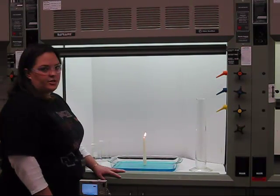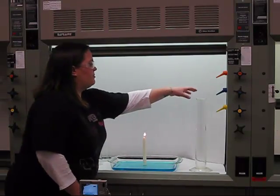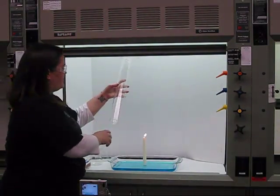And we're going to add a graduated cylinder on top of the candle, trying to keep it as straight as we can, so we can keep a column of air in the graduated cylinder.